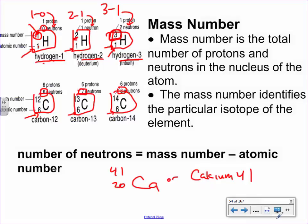So you either write it in notation as, say, Ca with 41 on top and 20 on the bottom, or you'd just call it calcium-41. Either way makes sense. Calcium always has 20 protons — it's number 20. How many neutrons does this calcium have? 41 minus 20 gives you 21 neutrons. Your identity is based on your protons — just like Grouchy Smurf is Grouchy because of his personality — protons are what identifies you.